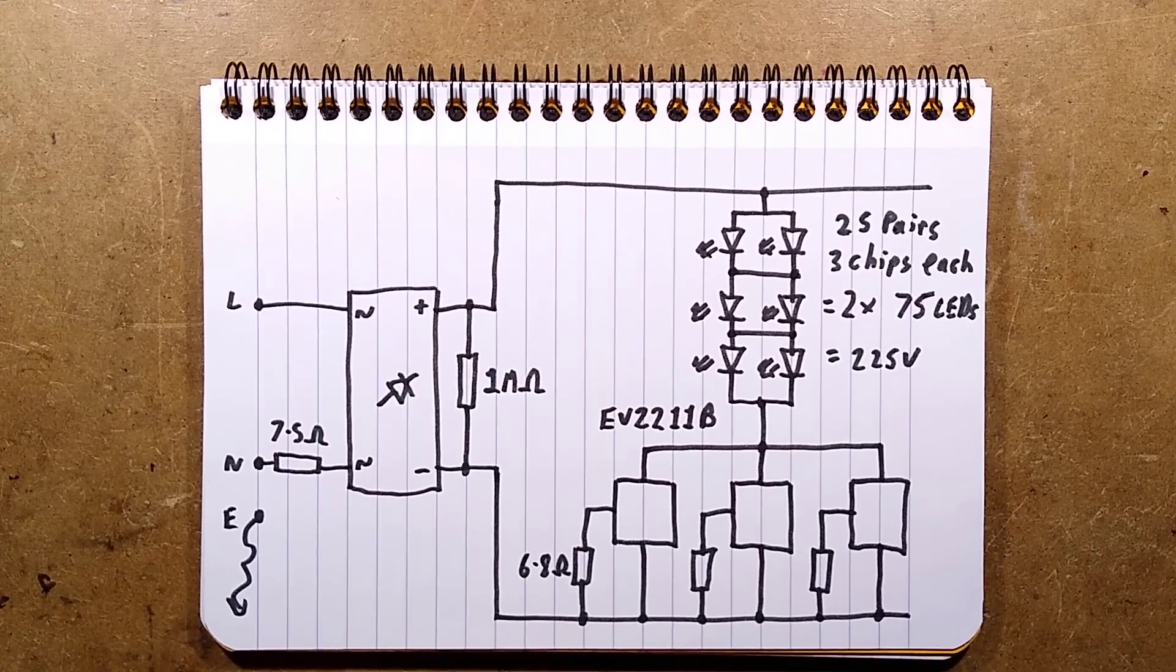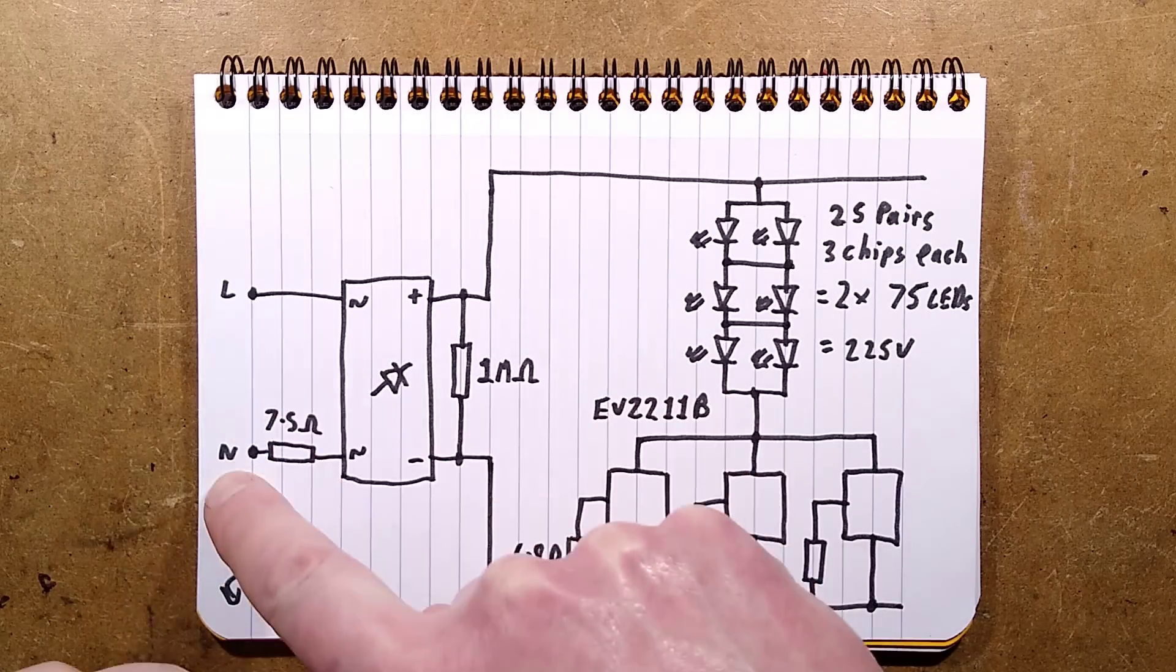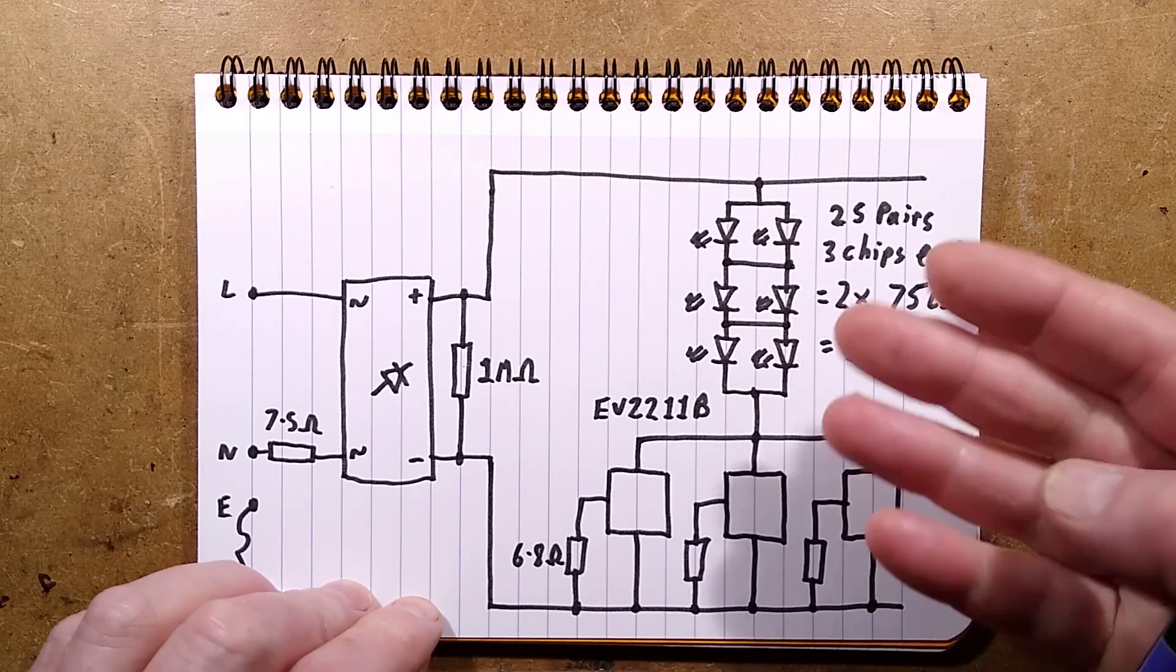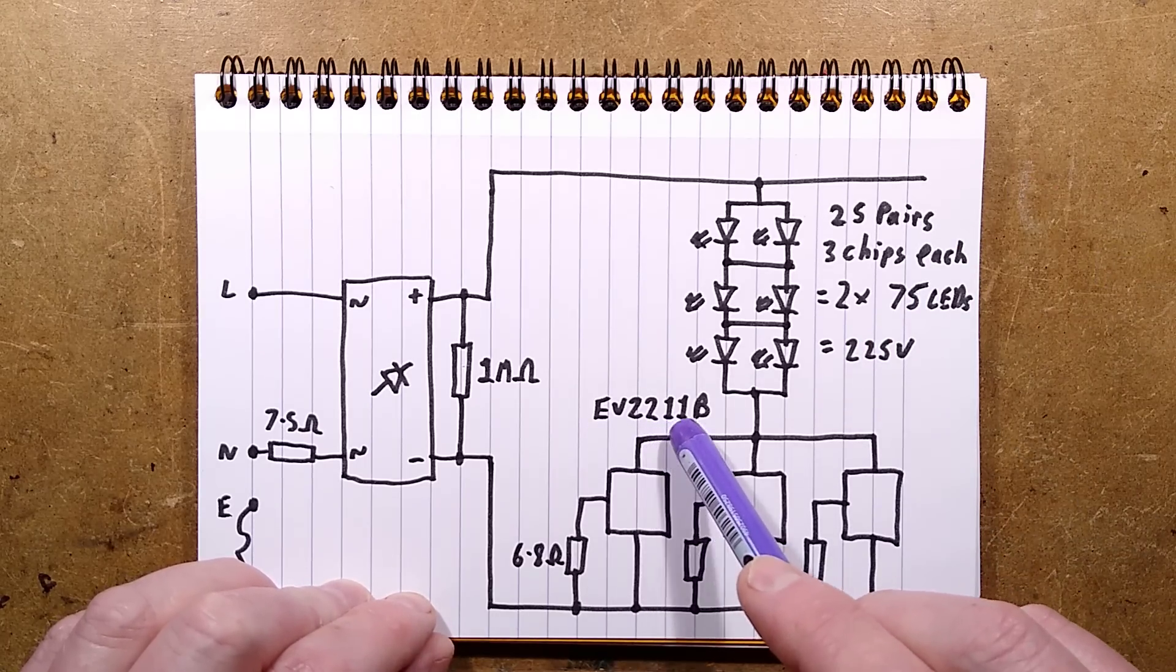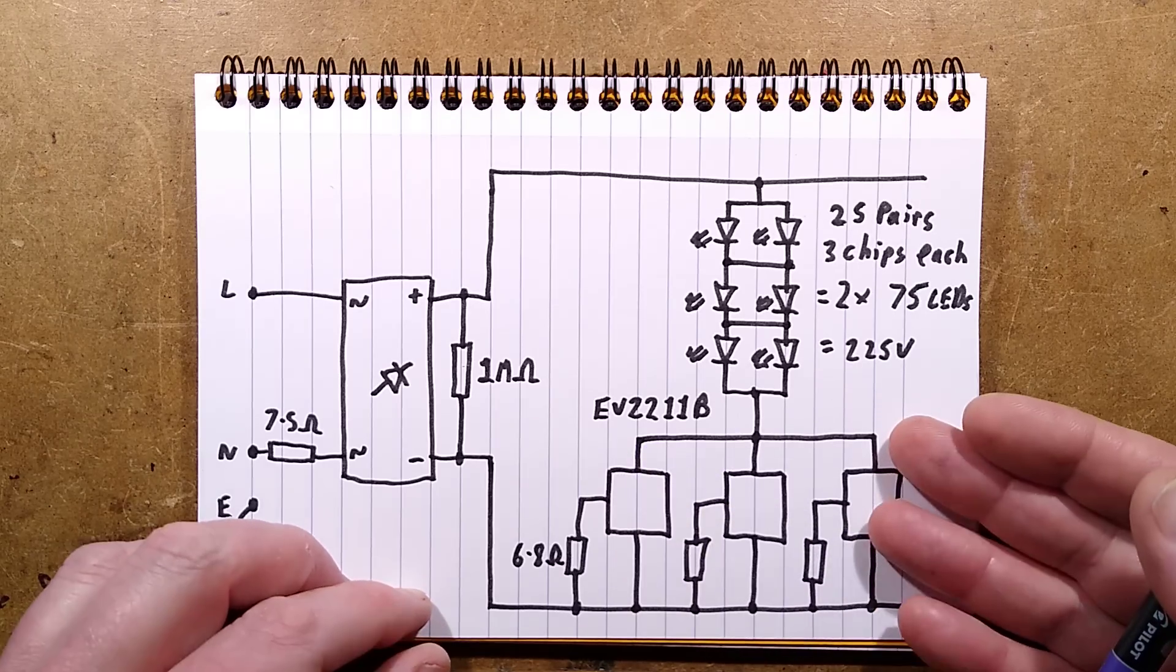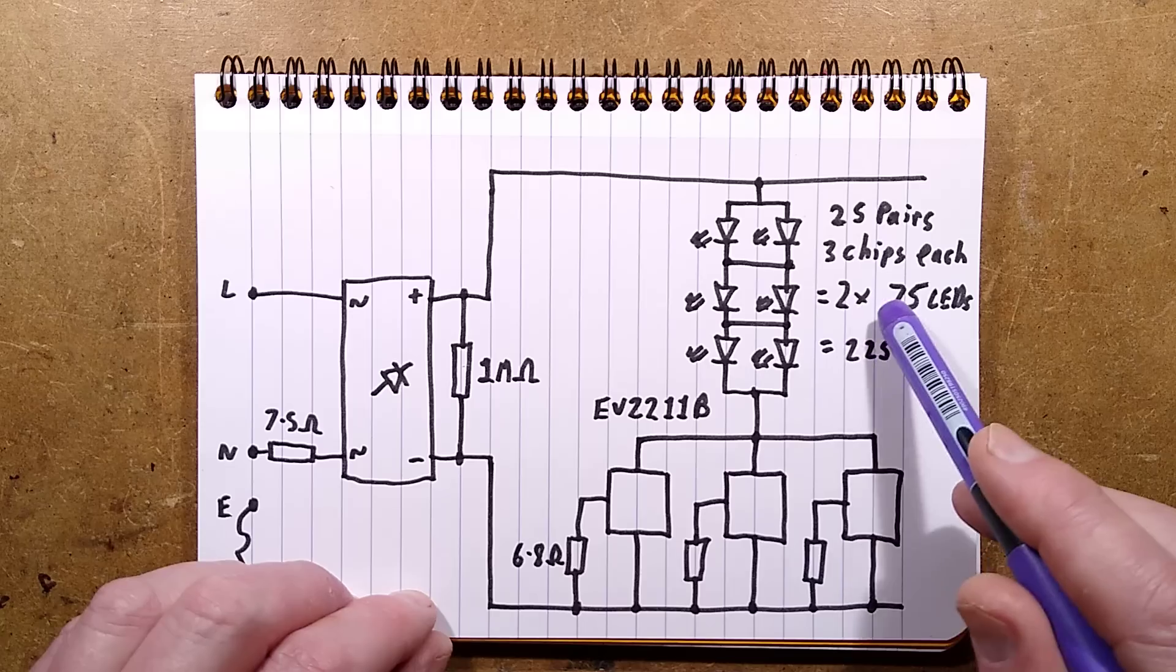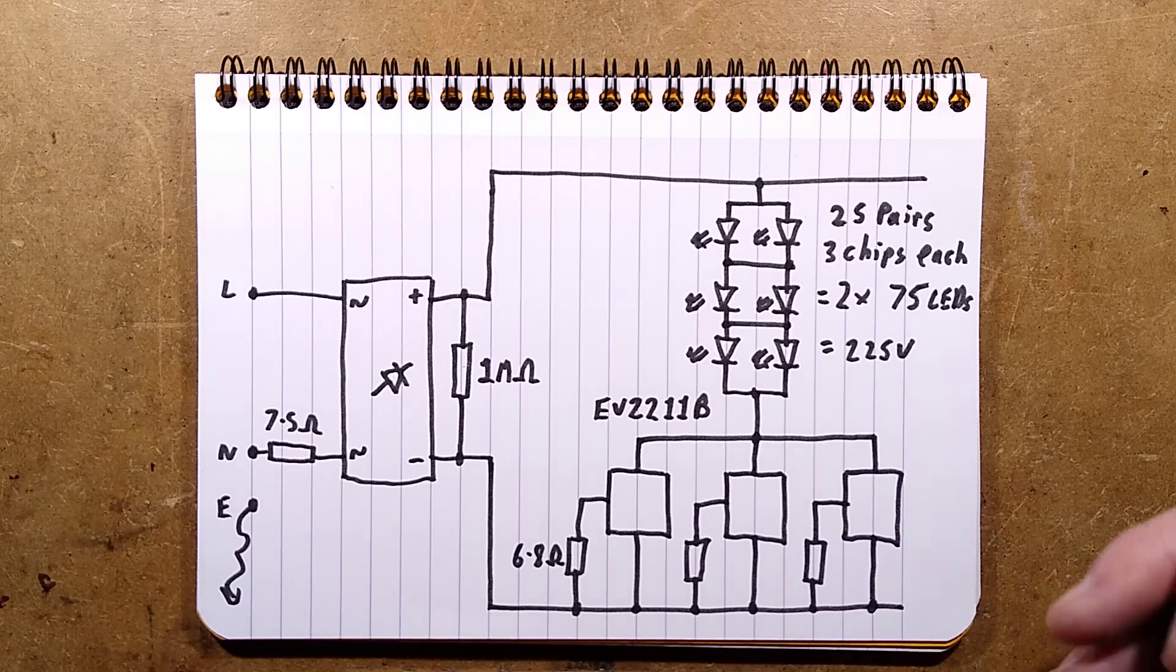Let me show you the schematic. There's the earth wire just going nowhere. There's live and neutral. Live goes to the bridge rectifier. Neutral via the fusible resistor. One mega ohm resistor to provide a slight load to prevent that slight leakage that causes random glowing. Not such an issue with ultraviolet LEDs. Here are the linear regulators EV2211B. Each with a 6.8 ohm resistor programming the amount of current. These also have that internal thermal sensing that if they detect the circuit board getting too hot, it will cut the current back. The LEDs are wired as 25 pairs, three chips each. So that's two sets of 75 LEDs gives a total of 225 volts across the LEDs and the rest is dropped across these.